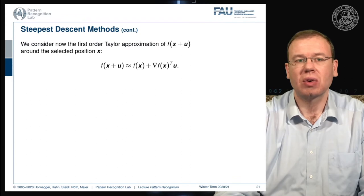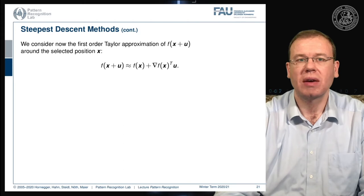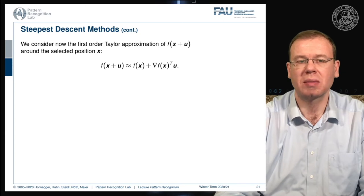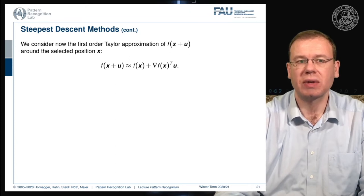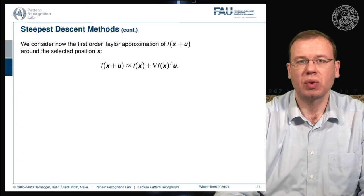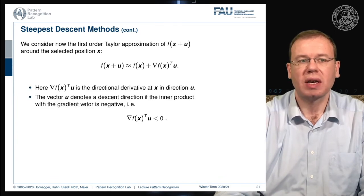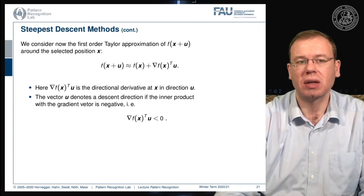Let's look at some ideas for how to perform this. We consider the first-order Taylor approximation of f(x + u). At a selected position x, we can approximate f(x + u) as f(x) plus the inner product of the gradient of f(x) with u. This inner product of the gradient and the unit-ball direction u is the directional derivative of f at x in direction u.